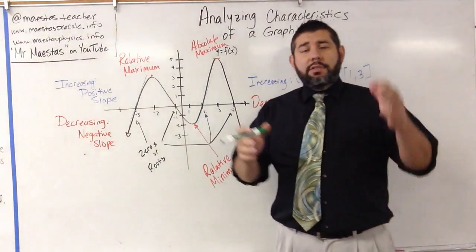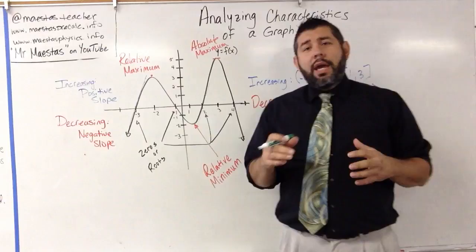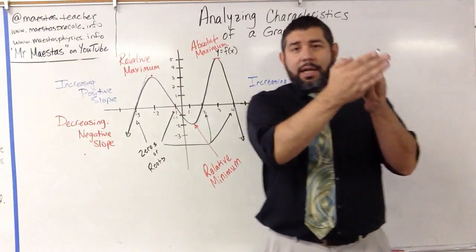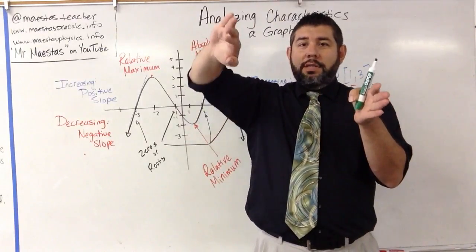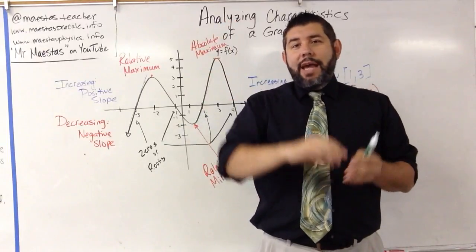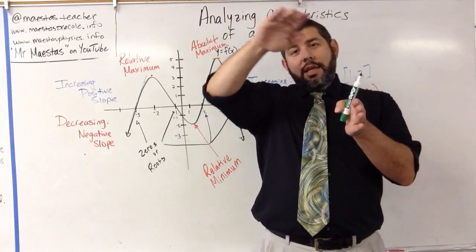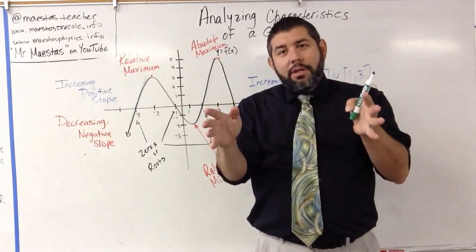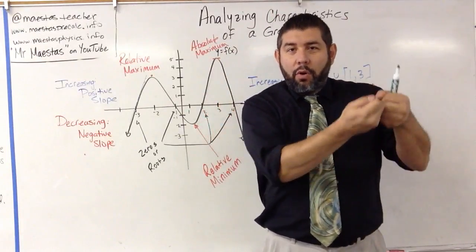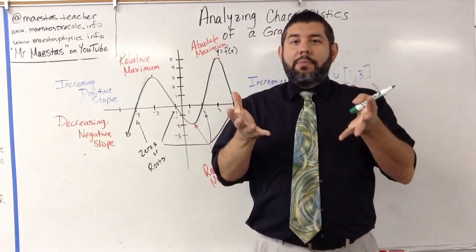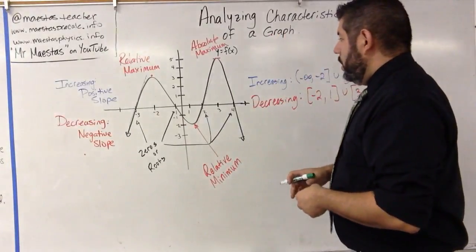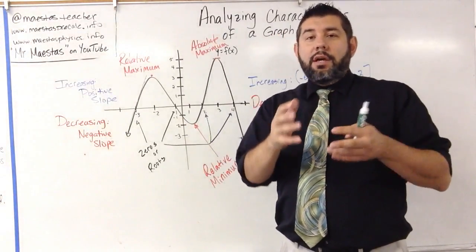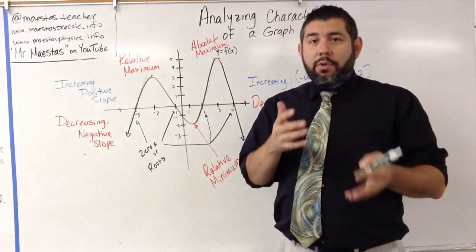What concavity is: we're looking for areas of the graph that are concave up or concave down. Concave up is like a bowl — that's concave up. Concave down is like a hat — you put a hat on, that's concave down; you have a bowl, that's concave up. So we're looking at where the graph goes from concave up to concave down, and we want to label those.